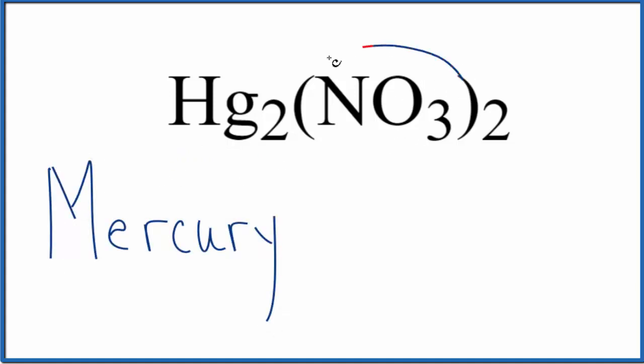Next, we need to write the name for the polyatomic ion. NO3, that's going to be the nitrate ion. So you've either memorized that, or if you're allowed, you look it up, lowercase n. And so far, the name for Hg2(NO3)2 is mercury nitrate.